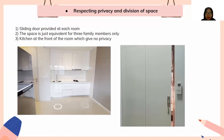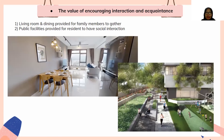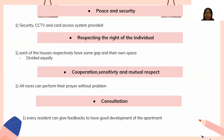For respecting privacy and division of space: sliding doors are provided at each room — the master bedroom and utility room. The space is appropriate for family members only. The kitchen is positioned at the front, providing further privacy. For encouraging interaction and acquaintance: the living room and dining room are shared spaces where family members can watch TV or have meals together, strengthening family bonds. Public facilities also provide spaces for social interaction among residents.